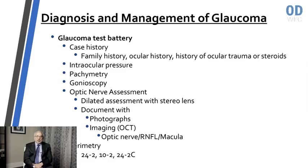Let me back up and talk about how we diagnose and manage glaucoma. The diagnosis and management includes a battery of tests. When a person presents for a comprehensive eye exam, there are reasons we may be suspicious — such as elevated intraocular pressure. We also include a case history: Is there a family history of glaucoma? Does the person have an ocular history putting them at risk, such as use of steroids or ocular trauma?